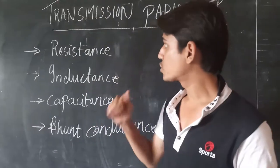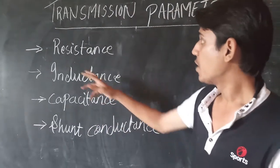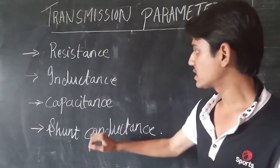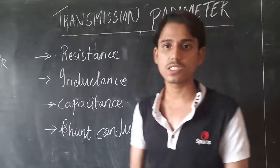There are four types of transmission parameters: resistance, inductance, capacitance, and shunt conductance.